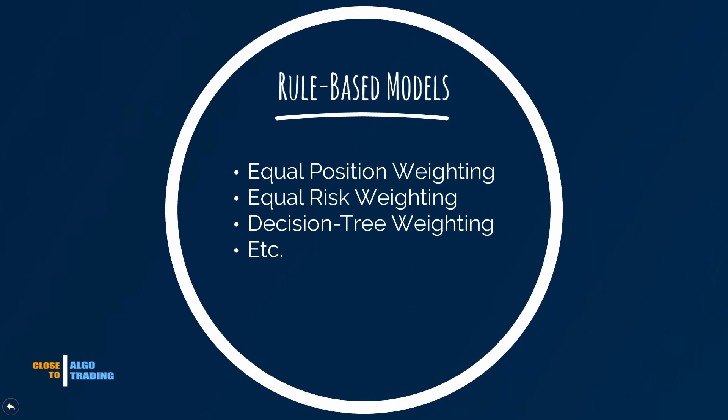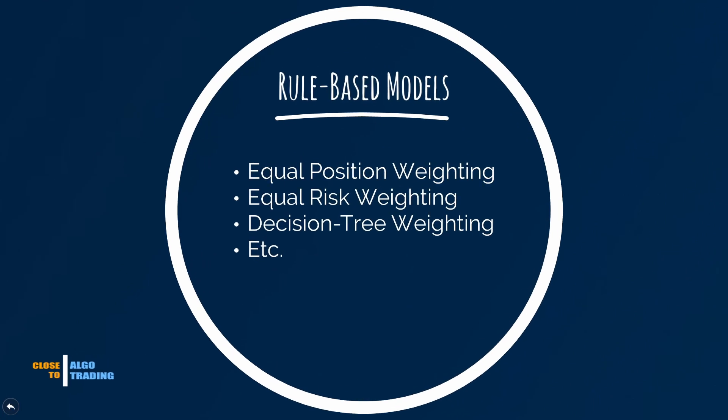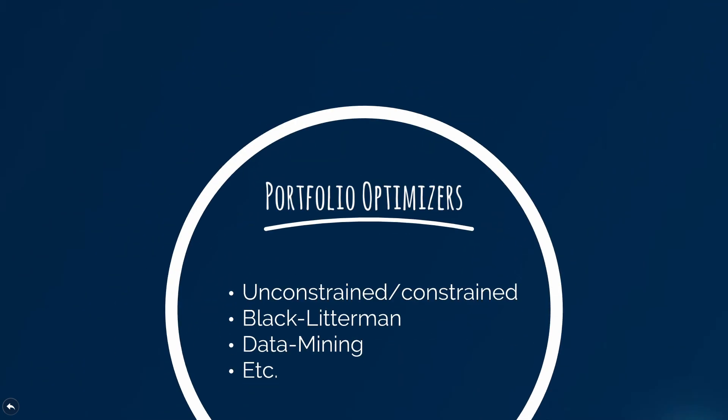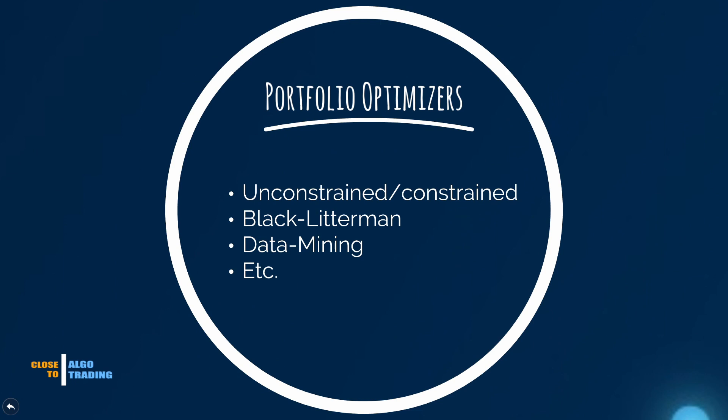First are the rule-based construction models, like equal weight, equal risk, decision-trees method, and so on. The second type of portfolio construction models are portfolio optimizers. Here you try to optimize an objective function for better asset allocation in the portfolio.